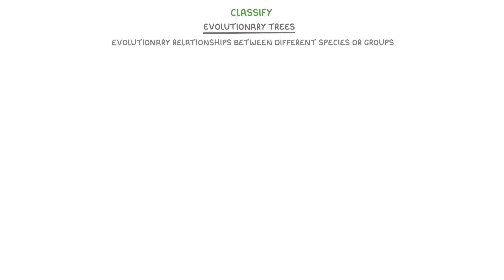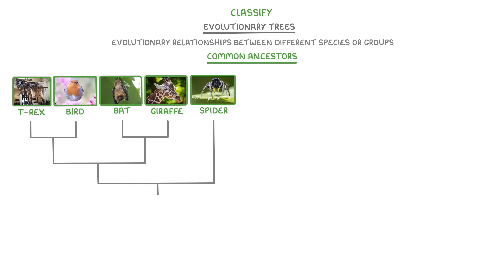The last thing we need to look at are evolutionary trees. These show us the evolutionary relationships between different species or groups by linking common ancestors. For example, we can see here that birds are more closely related to Tyrannosaurus rexes than they are to bats, because T-Rexes and birds share a more recent common ancestor, just here. And we can also see that bats and birds are more closely related to each other than either are to spiders, because they have this recent common ancestor, whereas their common ancestor with spiders is all the way back here, which means it's further in the past.